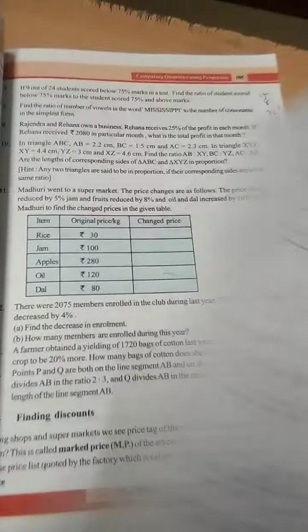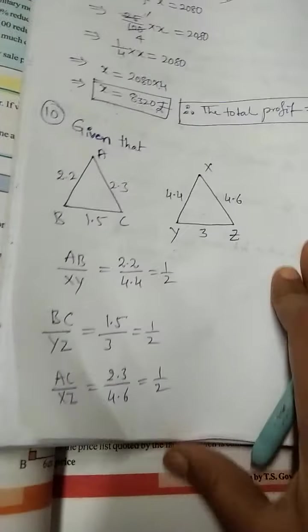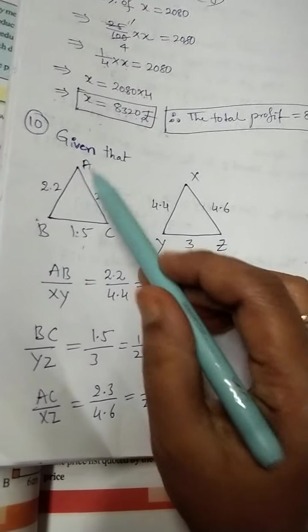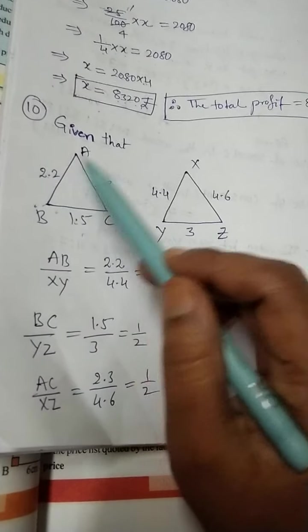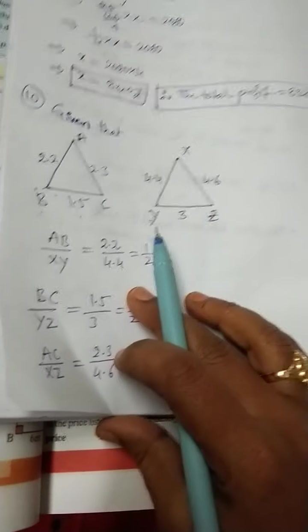How we can find? First of all, the given information. I took directly triangles ABC and XYZ. That side's length is already given in the question. So I wrote corresponding AB is 2.2, AC 2.3, BC 1.5. Similarly, XY, YZ and XZ values also I took.